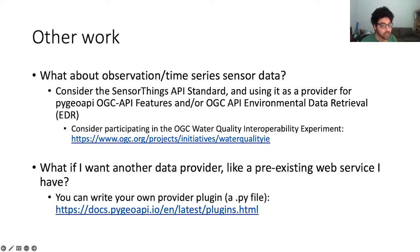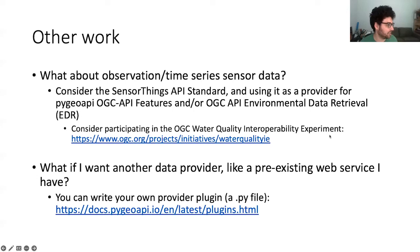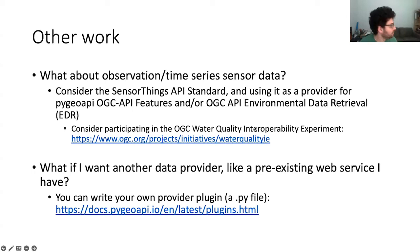Some other work coming down the pipe at the OGC and the Internet of Water: that's all good for geospatial data, but what about time series data where the location is more of a tag but not the main feature? I'd suggest considering the SensorThings API standard and using it as a provider for Features or Environmental Data Retrieval. We're also starting an international project in September at the OGC called the Water Quality Interoperability Experiment — that's going to be about setting water quality data standards and will include how to use OGC API Features or Environmental Data Retrieval to serve that data. PyGeoAPI will be used to demonstrate the approaches we come up with.